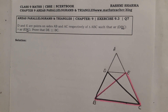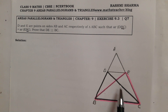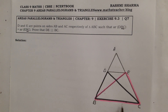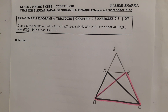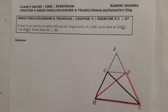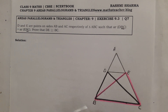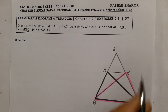We use the converse of the theorem: if two triangles have the same base and lie between the same parallel lines, their areas are equal. The converse tells us that if two triangles have the same base and equal areas, they must lie between the same parallels.